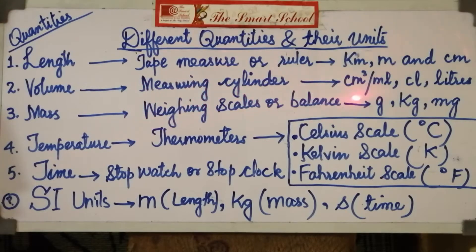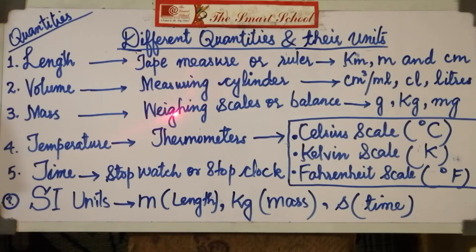The units used to measure volume are cubic centimeter, milliliter, centiliter, and liters. In science we use cubic centimeters as a unit of volume, while the others are milliliters represented as ml, cl for centiliters, and l for liters.